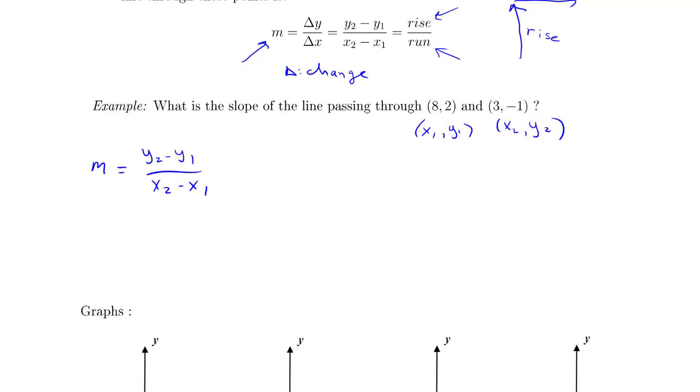Very important: remember it is the change in y over the change in x—y is in the numerator. So y₂ is -1 minus y₁ is 2 over x₂ is 3 minus x₁ is 8. We would get -3 over -5, or 3/5. So we were able to calculate that slope.